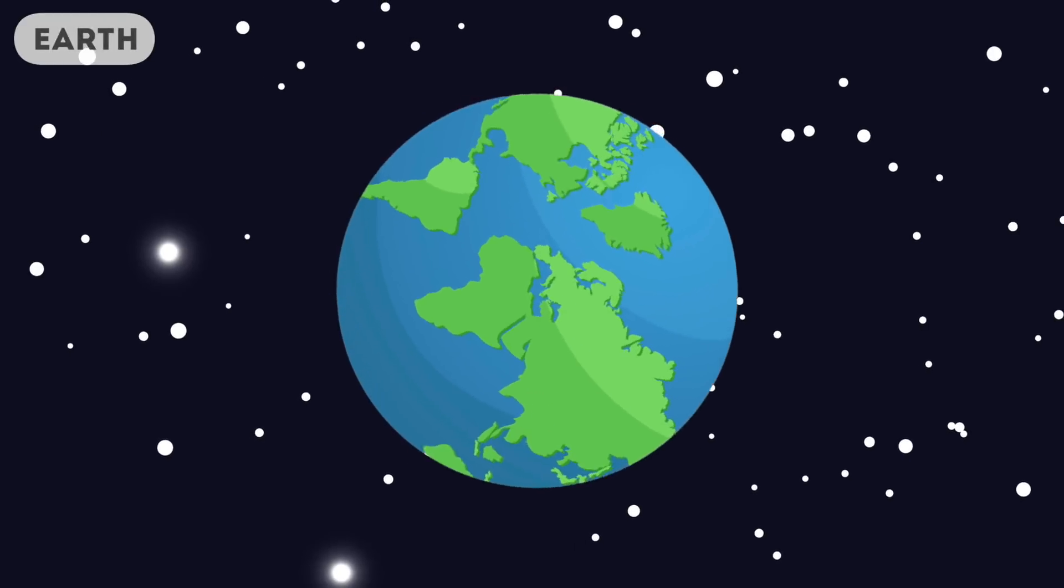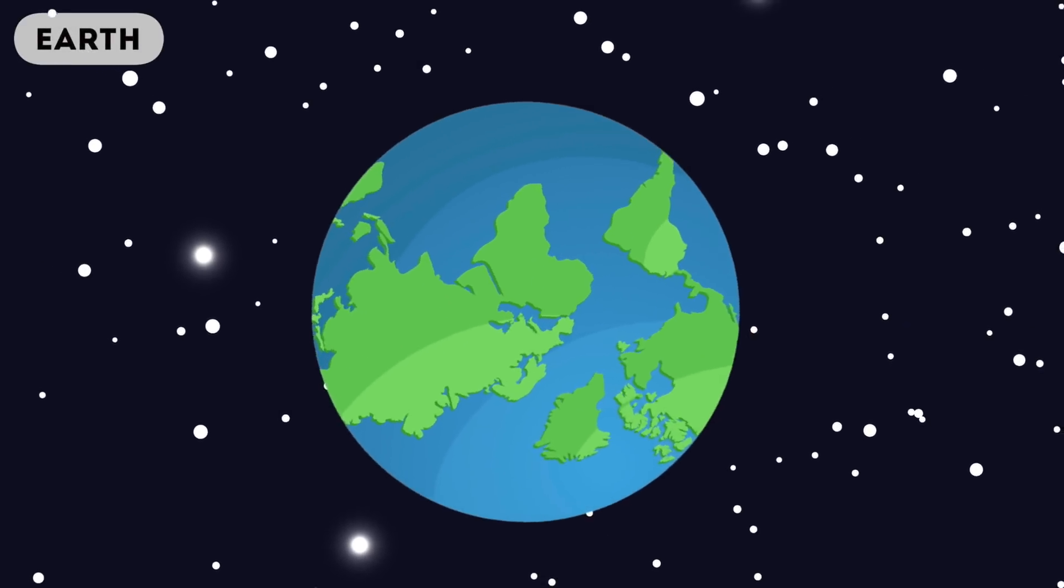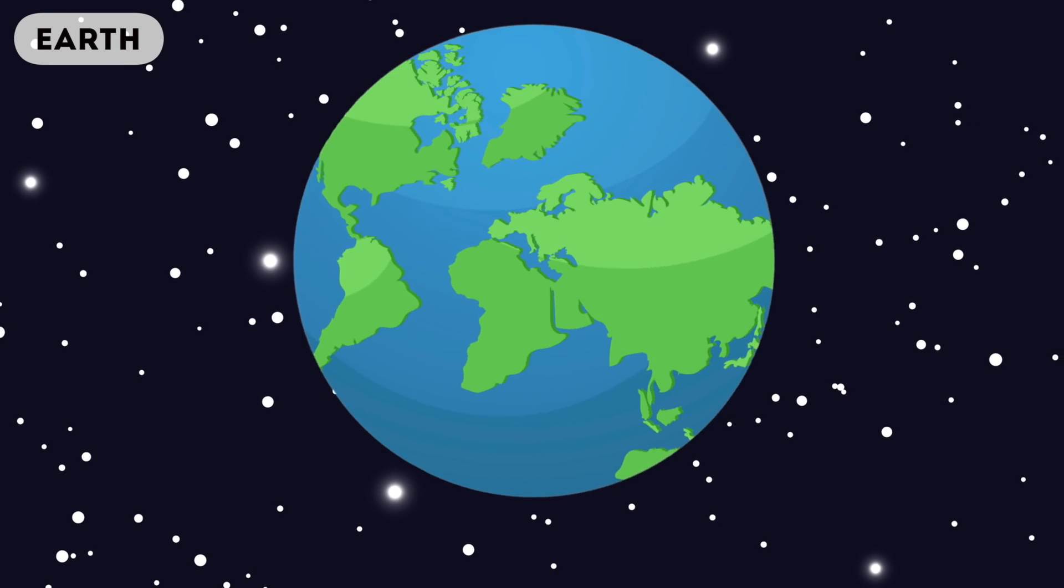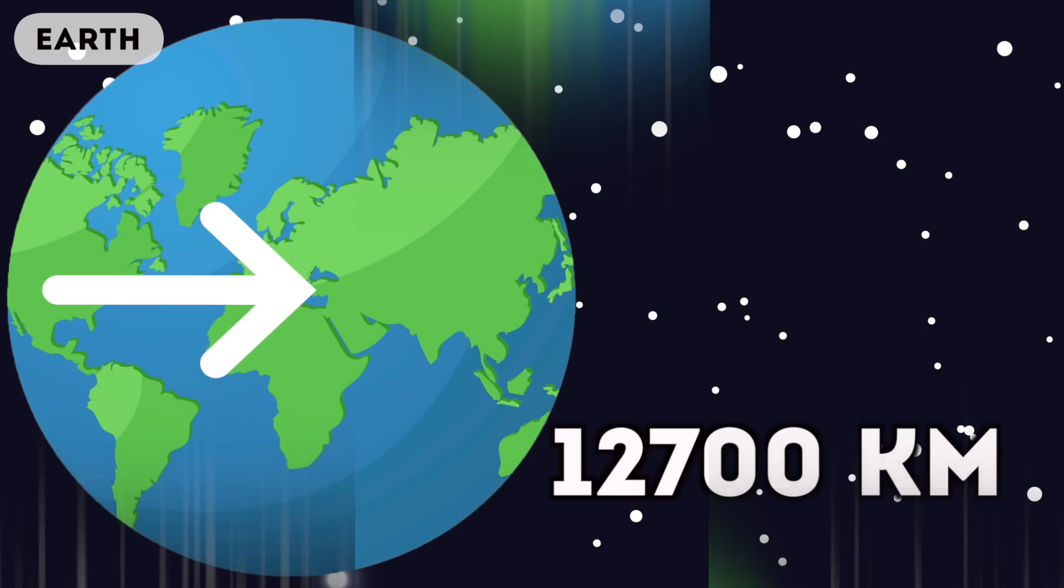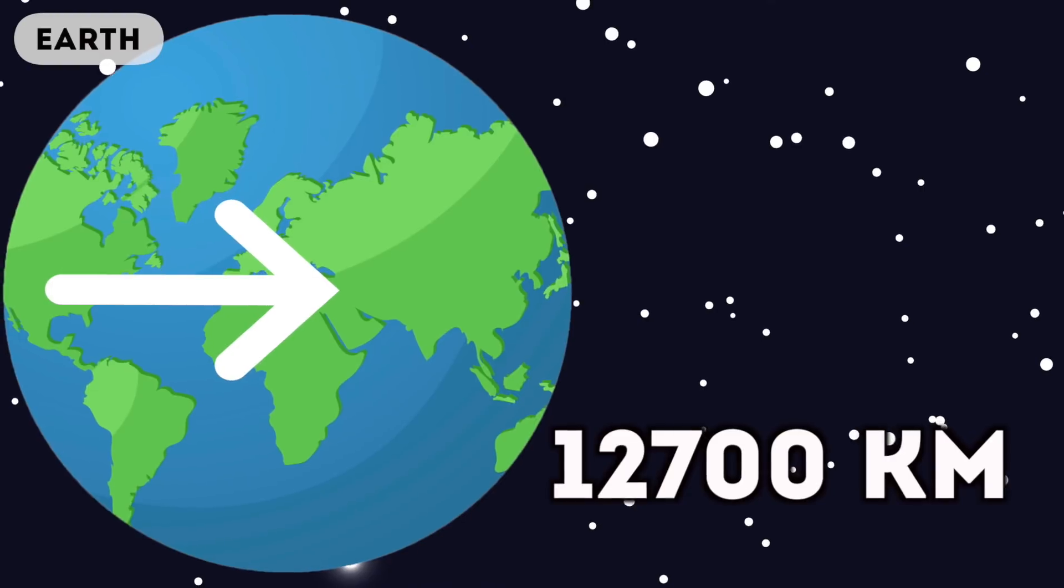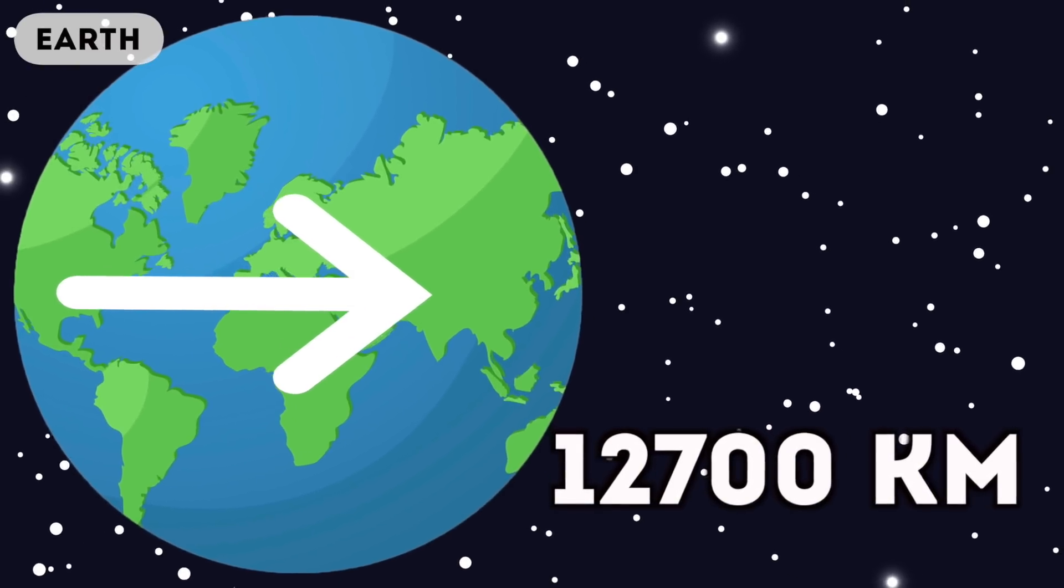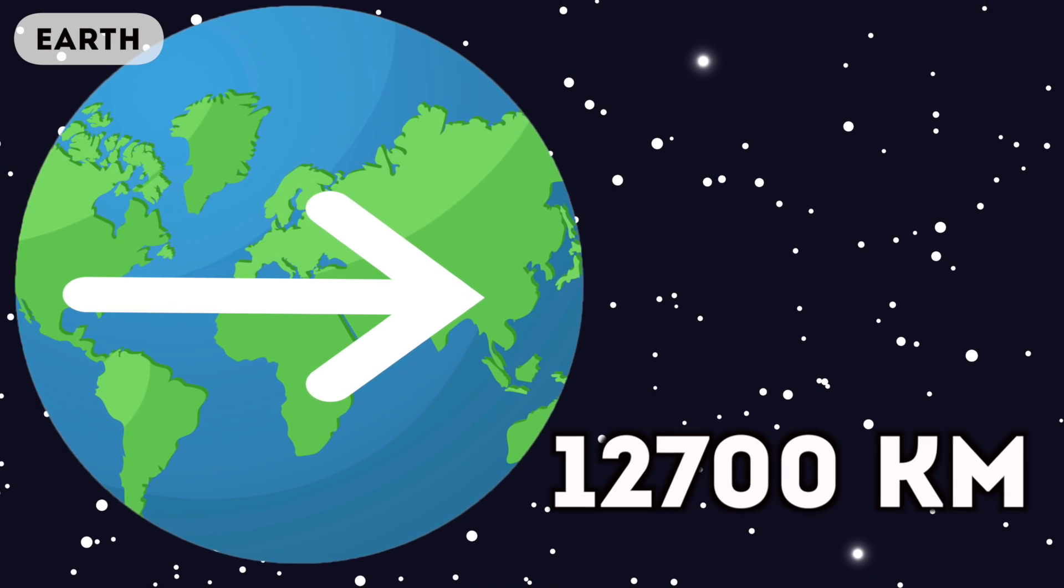So we're not going to spend too long on this planet as we already live on it, but just so we can get some perspective and compare it to other planets, let's look at Earth. The Earth has a diameter of 12,700 kilometers and despite it seeming so large to us, it's actually a pretty tiny planet in the grand scheme of things.